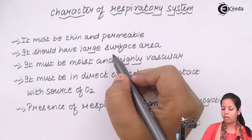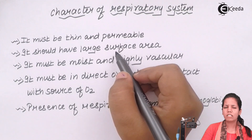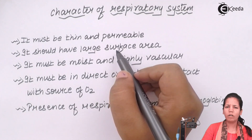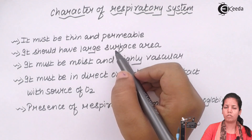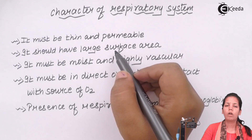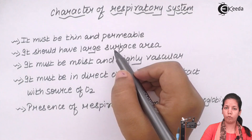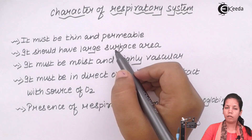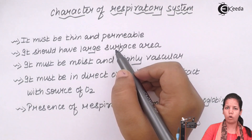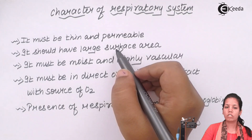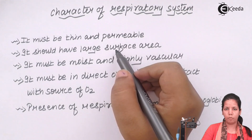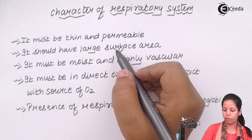Also, it should have a large surface area. Your respiratory tract cannot be a small area — then how would gaseous exchange occur? The gaseous molecules, which include oxygen, carbon dioxide, and when you inhale, also dust particles and nitrogen — where are they going to reside for the period of time until oxygen is kept inside the body and carbon dioxide is removed?